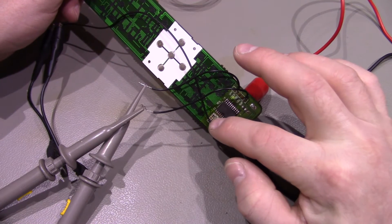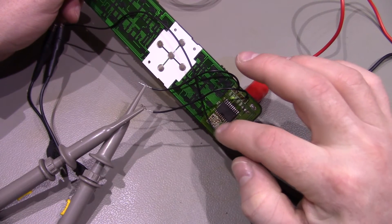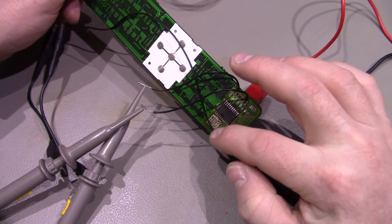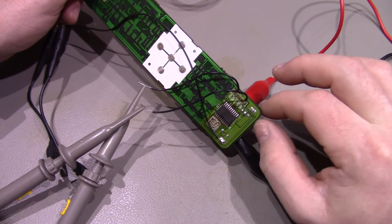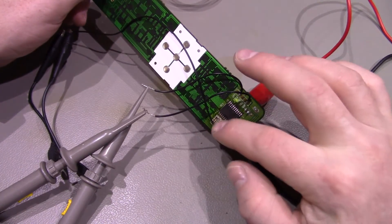I've lifted a trace down here but that's not a major problem because these are just simply zero ohm resistors for different configurations of the remote, so that's not a problem.